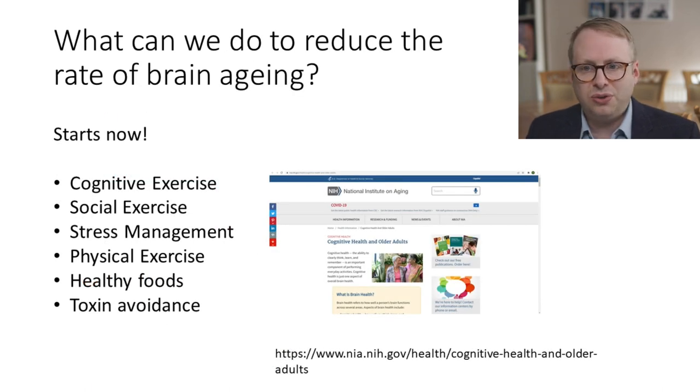So what can we do to reduce the rate of brain aging? And the truth is, it actually starts now. Whatever age you are at, the process of trying to improve how we are when we are older literally starts now. Whether it's doing cognitive exercises, social exercises where we interact with other people, stress management is very important because depression is very bad for the brain in terms of aging. Physical exercise, healthy foods, toxin avoidance, and more details on any of those can be found from the National Institute on Aging, and I'll put a link below.